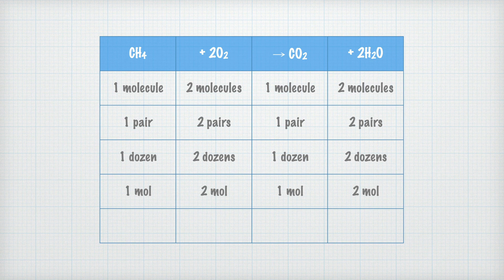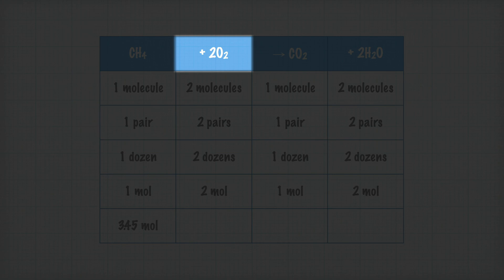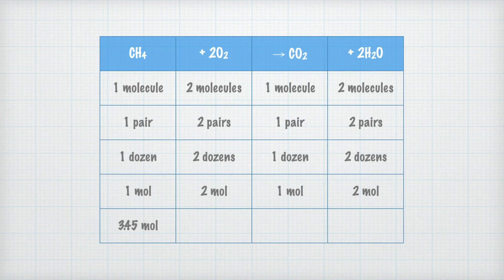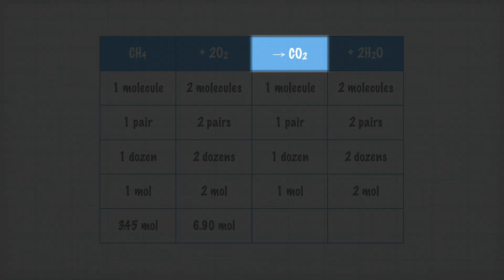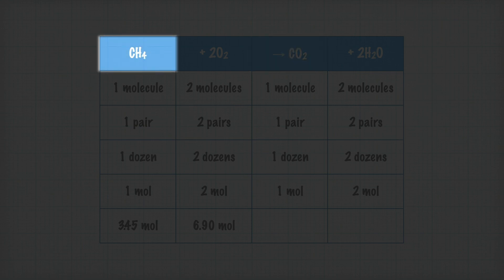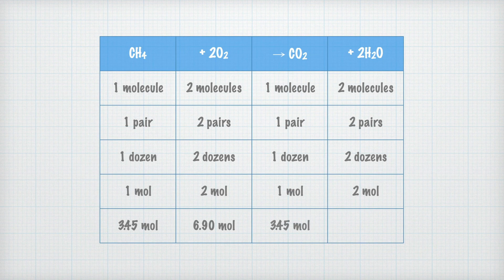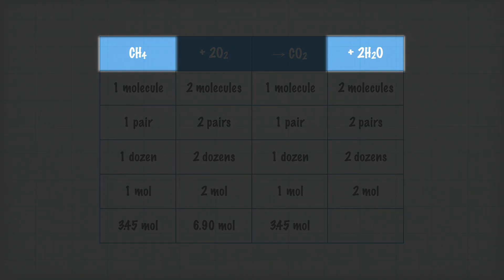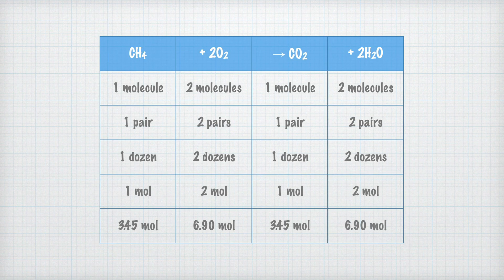What happens if we have 3.45 moles of methane? The relative quantities tell us that the amount of oxygen must be twice as large as the amount of methane, so we need 6.90 moles of oxygen gas. The amount of carbon dioxide formed equals the amount of methane: 3.45 moles. And the amount of water is twice as large: 6.90 moles.